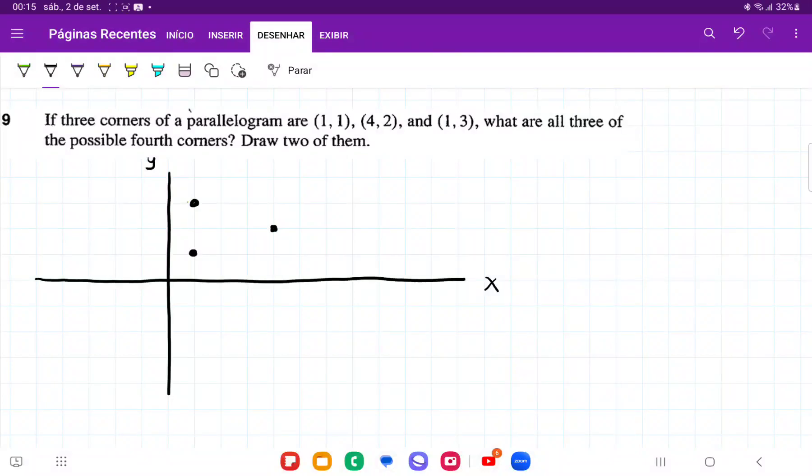So in problem 9, we are given three corners of a parallelogram, and that's point (1,1), which I've drawn in, (4,2), and (1,3). Then it asks us what are all three of the possible fourth corners. Draw two of them.